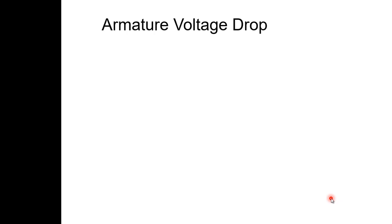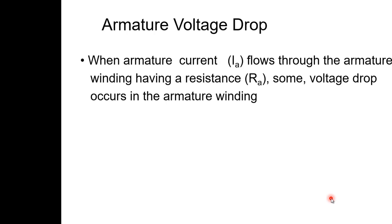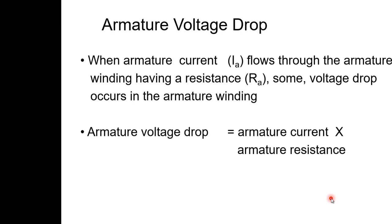We will see the armature voltage drop. When armature current Ia flows through the armature winding having a resistance Ra, some voltage drop occurs in the armature winding. The armature voltage drop equals armature current multiplied by armature resistance, that is Va = Ia × Ra.